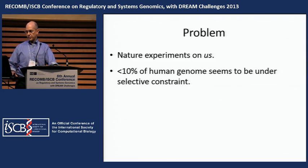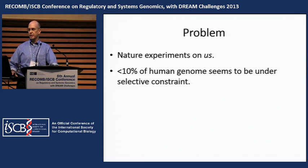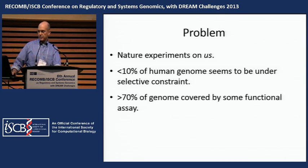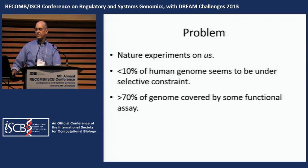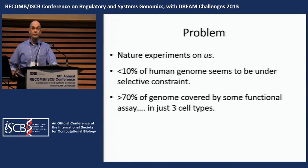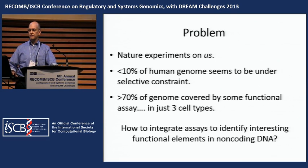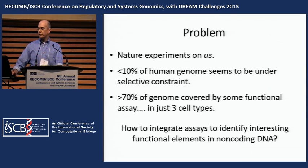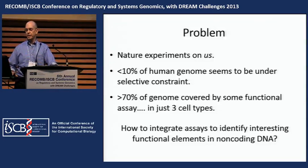Current measures identify less than around 10 percent of the human genome as under the selective constraint needed for phenotypical variation, and provide only clues as to the specific functional properties. In contrast, functional assays provide more specific information. However, positive assay hits cover more than 70 percent of the human genome, and we observed this in just three cell lines. So the question is: how do we integrate assays to identify interesting functional elements in non-coding DNA while minimizing false positives?